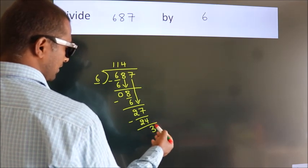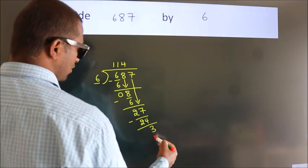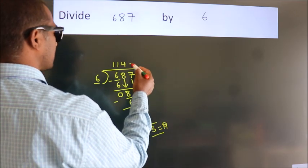After this, no more numbers to bring down. So we stop here. This is our remainder. This is our quotient.